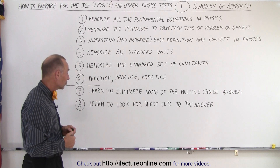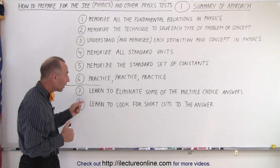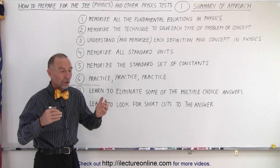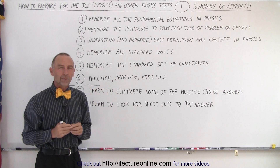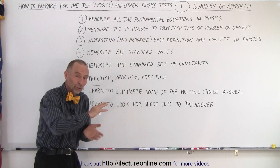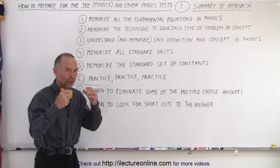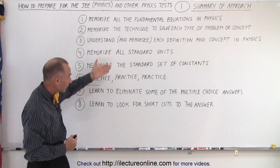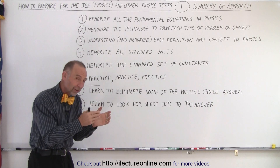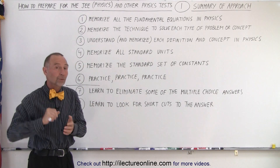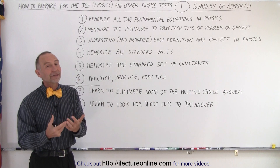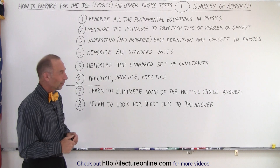Now, once you go into the test room and start taking the test, you need to learn how to eliminate some of the multiple choice answers. For example, you may know the answer is always less than one, so any answer greater than one is automatically eliminated. Or you know it must be positive, so you eliminate all the negative answers. That's based on your understanding of the first five concepts. When you're not quite sure how to solve a problem but can eliminate one, two, or three choices, guessing gives you a higher probability of getting it correct — and ultimately more points.